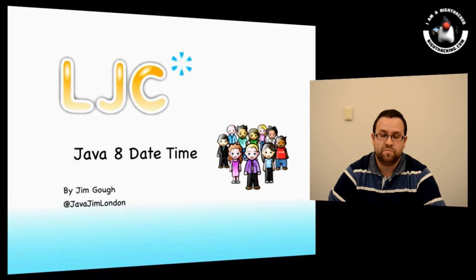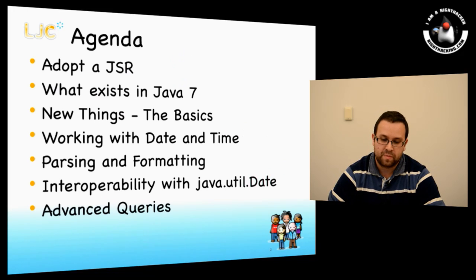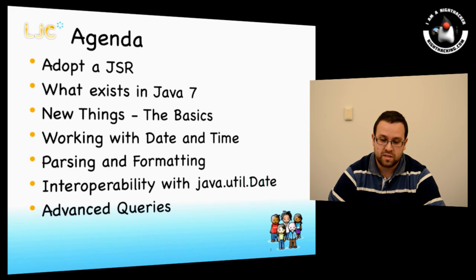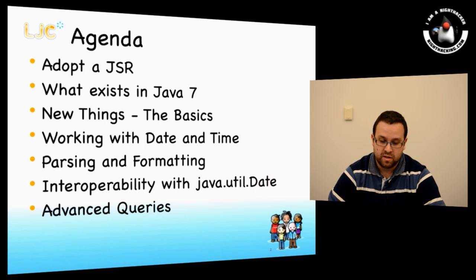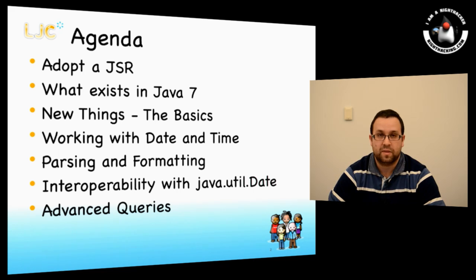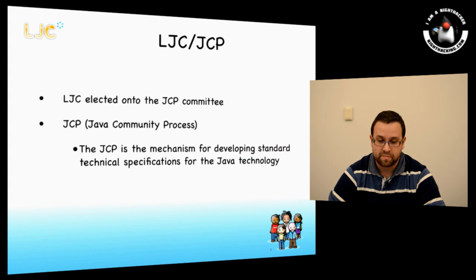Hi, I'm Jim Gough from the London Java Community. I'm going to introduce the Java 8 Date-Time API. We'll briefly go through what AdoptedJSR is and why I was involved. We'll discuss what's already in Java 7, then look at new things: how you work with date-time, some parsing and formatting examples, how you can interoperate with java.util.Date, and then some advanced queries.